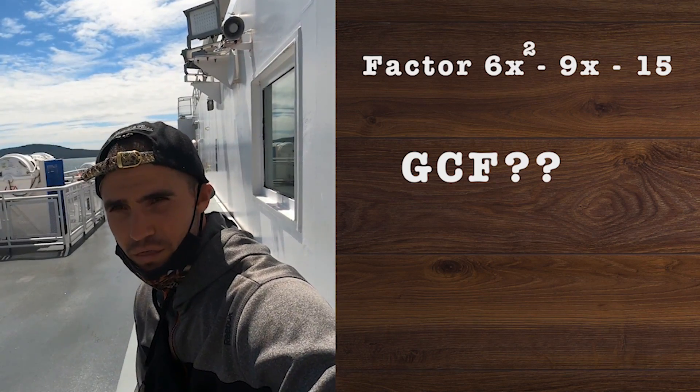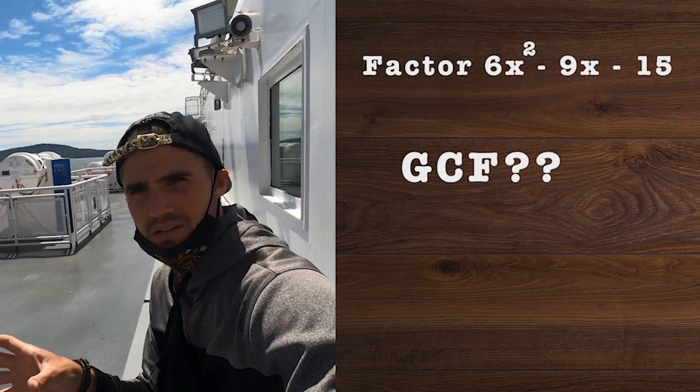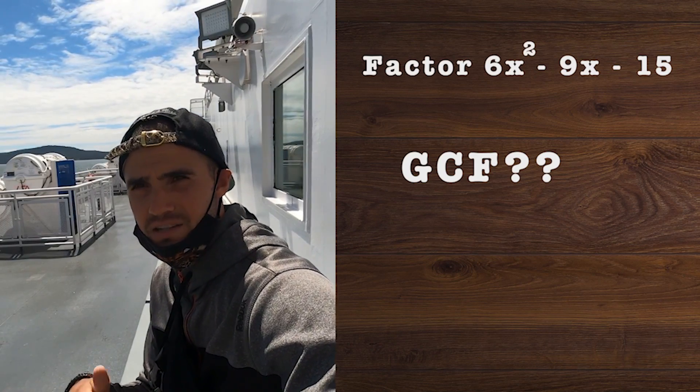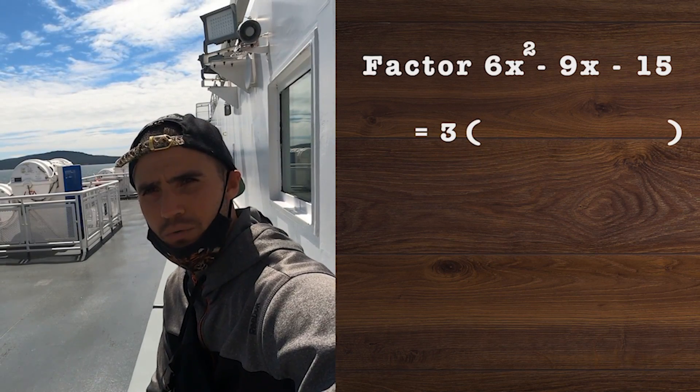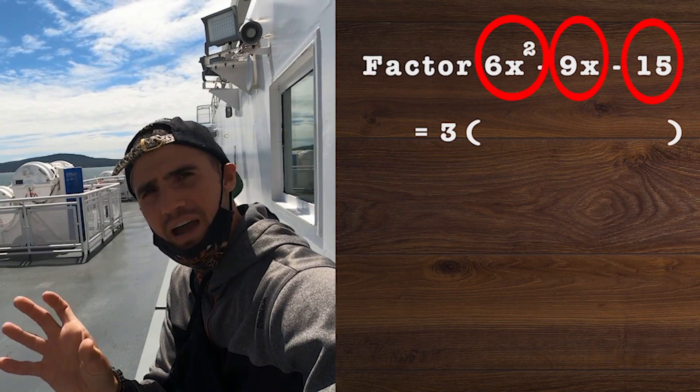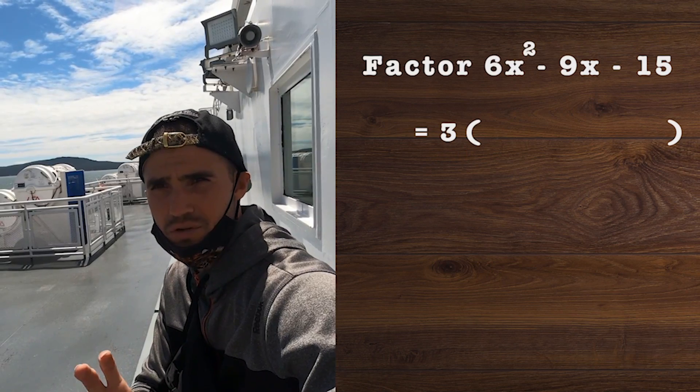So what is the first step? What do we always check? We check if we can take out a greatest common factor. With 6, 9, and 15, notice that the greatest common factor is 3, and we can take out that 3.